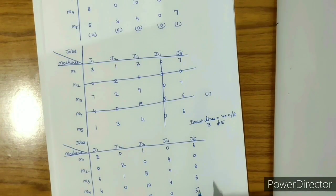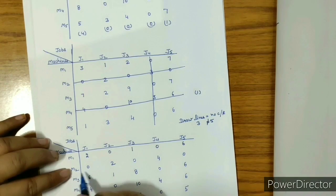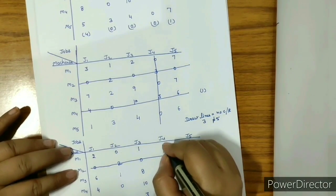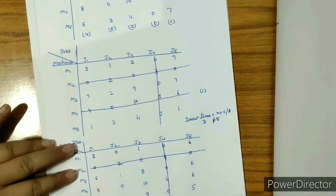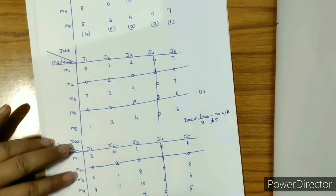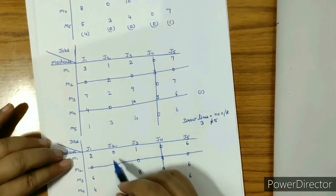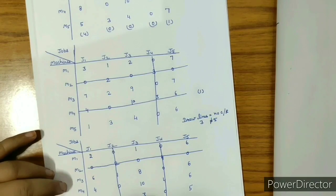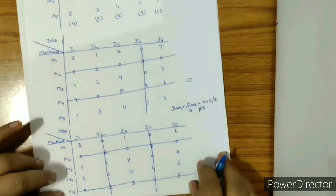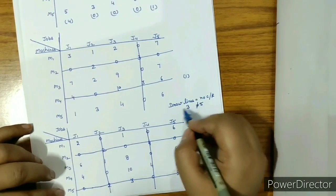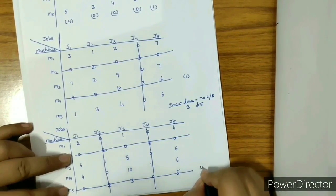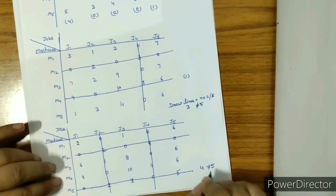Again we draw lines to cover maximum zeros in minimum ways. Row 2 has 3 zeros — draw horizontal line. Column 4 has 3 zeros — draw vertical line. Two remaining zeros require additional lines: a vertical line and a horizontal line. Total draw lines = 4, which is not equal to 5, so we proceed to the next iteration.